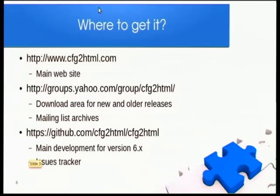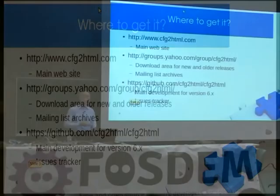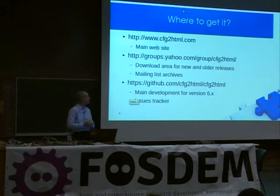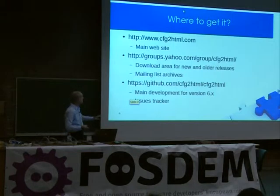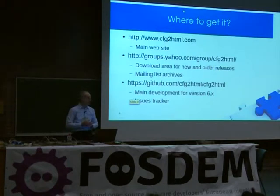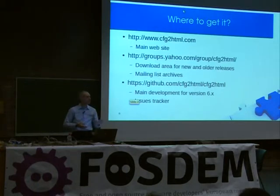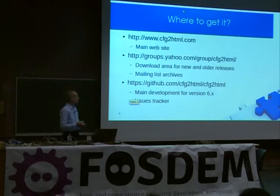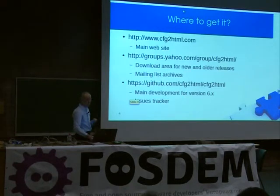Where can you get it? It's quite obvious. There is a main website maintained by Ralf, and there are also mailing lists, also maintained by Ralf — quite old with a lot of history. The latest sixth version is on GitHub. You can just clone it and start working with it. There are also issue trackers. I really like the GitHub issue trackers because it's the main tracking of all issues I have, since this is not the only open source project I work on — otherwise I'd just get lost in all the emails.